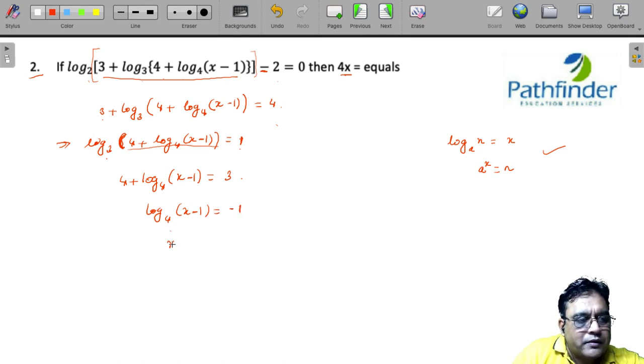So x minus 1 is 4 to the power minus 1, which is 1 by 4. So x equals 5 by 4.